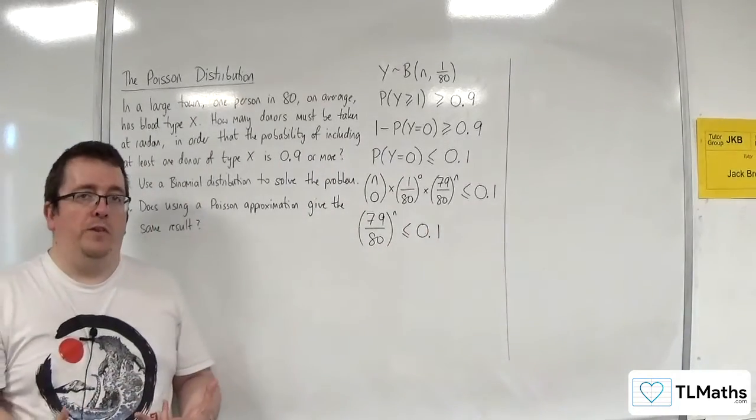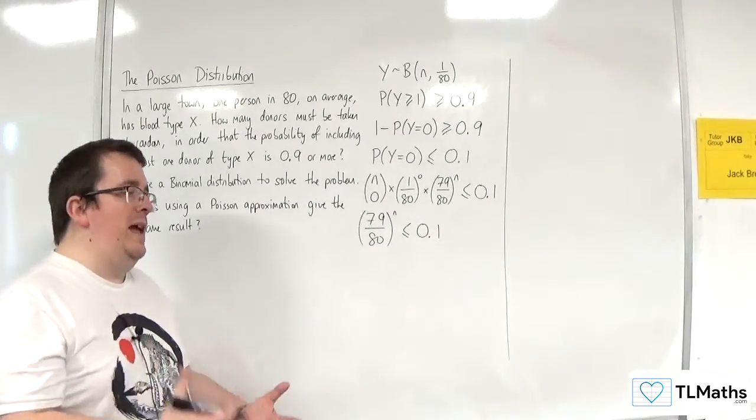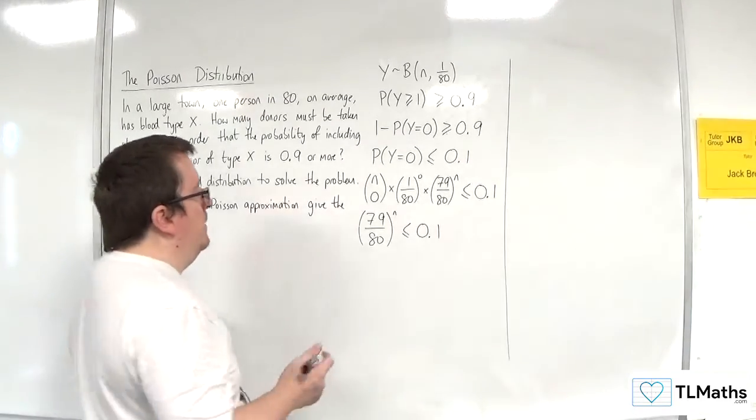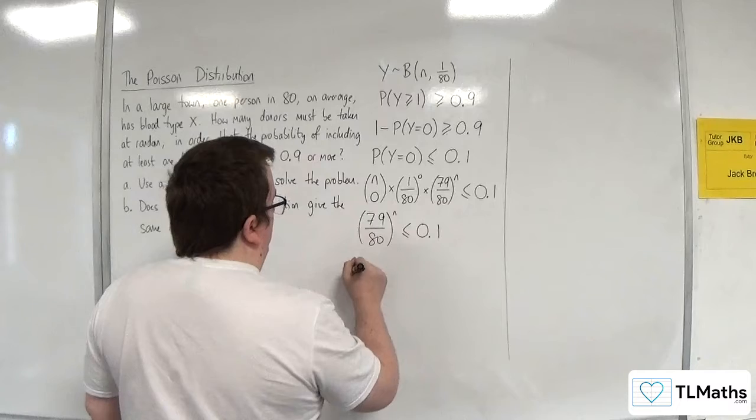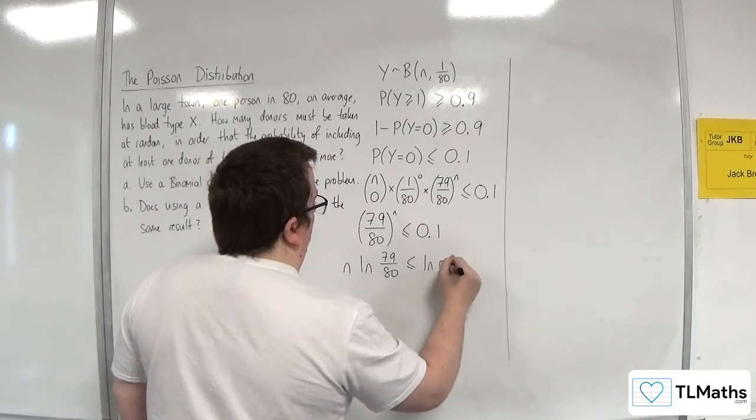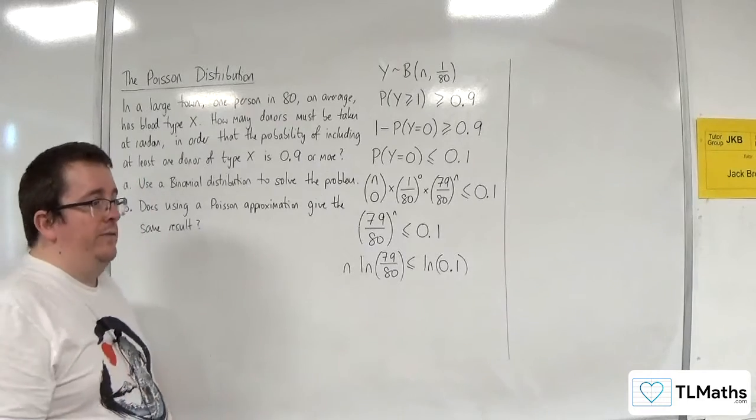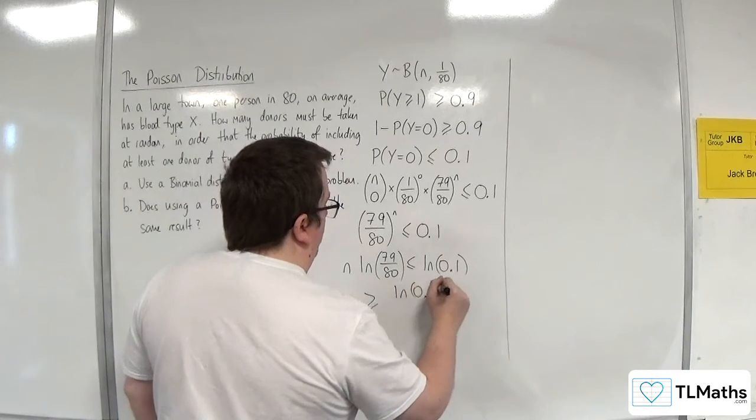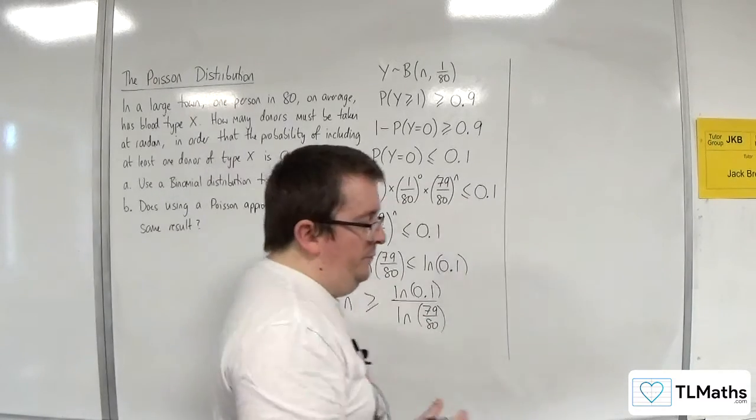Now in order to solve this inequality, I'm going to take natural logs of both sides. If I take natural logs of both sides, I'm going to get natural log of the left hand side, bring the N down to the front, so N times the natural log of 79 over 80 is less than or equal to the natural log of 0.1. Now, the natural log of 79 over 80 is negative, so when I divide through, it flips the inequality symbol, so I'm now going to have the natural log of 0.1 divided by the natural log of 79 over 80.